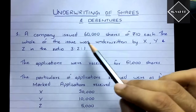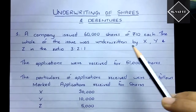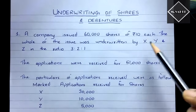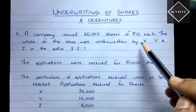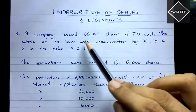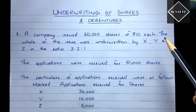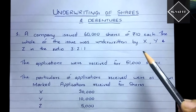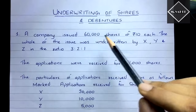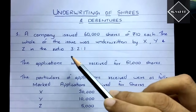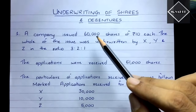A company is issuing 60,000 shares to the public, and this whole issue is being underwritten by three persons X, Y, and Z — these persons are underwriters. They give a guarantee and assurance to the company that the shares will be subscribed by the public. They promote the company in return for a commission, and if the public doesn't subscribe, they take the responsibility in the ratio 3:2:1 and will purchase the remaining shares from their own pocket.